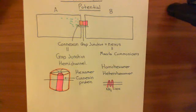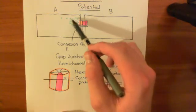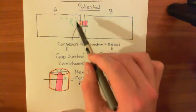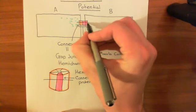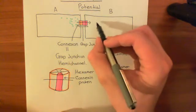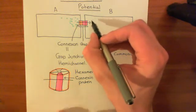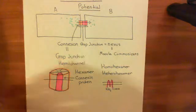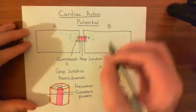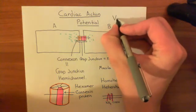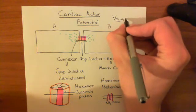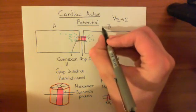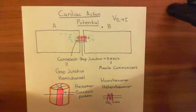The important thing to understand is that when cardiomyocyte A undergoes an action potential and has these additional sodium ions making the intracellular compartment more positive, some of these sodium ions are going to be able to diffuse through the gap junction and go into cardiomyocyte B. When you bring in those additional sodium ions into cardiomyocyte B, what's it going to do to the electrical potential difference across that cell membrane? When we say the electrical potential difference across the cell membrane, we really mean the electrical potential difference from the extracellular compartment to the intracellular compartment.